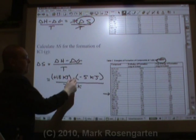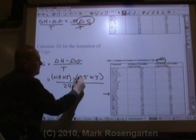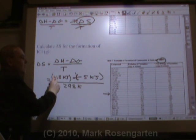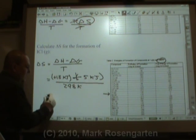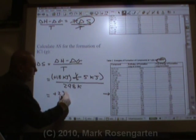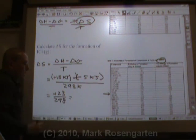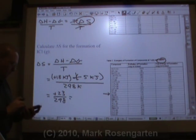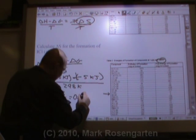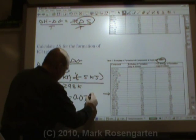And then solve. So positive 18 minus a negative 5, that's the same thing as adding 5. 18 plus 5 is positive 23 divided by 298. And what does that come out to?